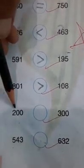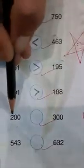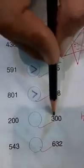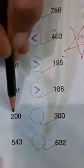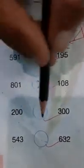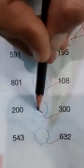Now 200 and 300. 200 is less than 300, so 200 is less than 300.